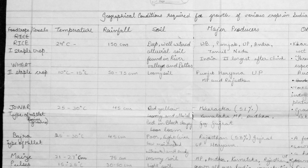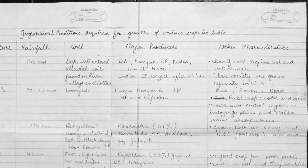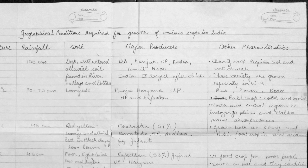Rice is one of the first staple crops in India. Temperature required is around 24 degrees Celsius, rainfall is 150 centimeters, and the type of soil required is deep, well-watered alluvial soil found in river valleys and deltas. Major producers are states like West Bengal, Punjab, UP, Andhra Pradesh, and Tamil Nadu. It is a Kharif crop which requires a hot and wet climate.